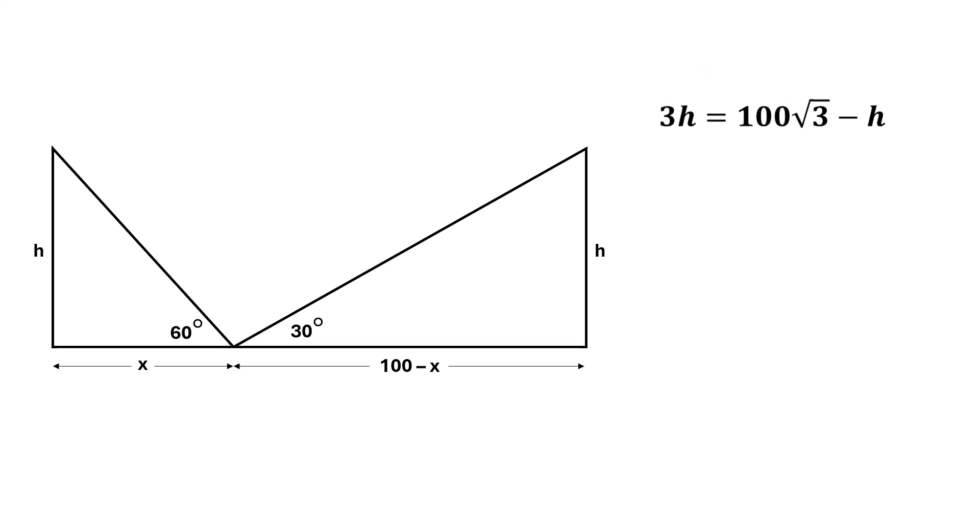Bringing like terms together, 4 times h equals 100 times square root of 3. So, the value of h is 25 times square root of 3. And that's our answer.